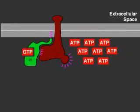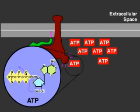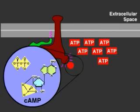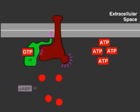Activated adenyl cyclase converts ATP to cyclic AMP, which then acts as a second messenger that relays the signal from the G protein-coupled receptor to other components in the cell.